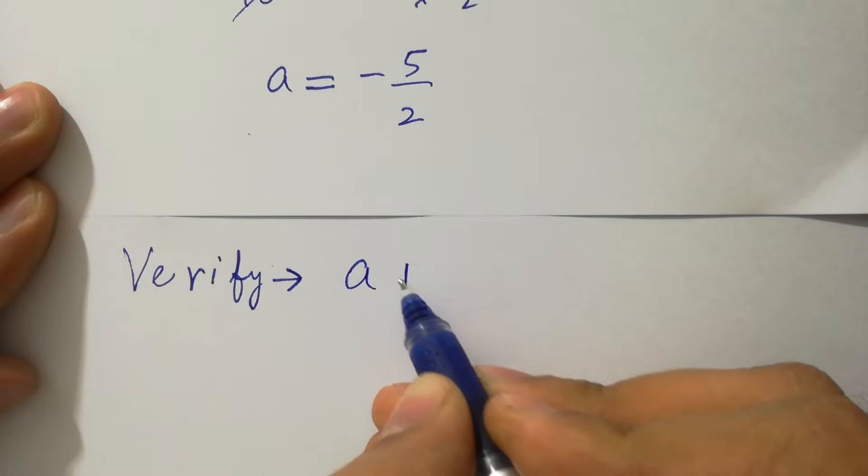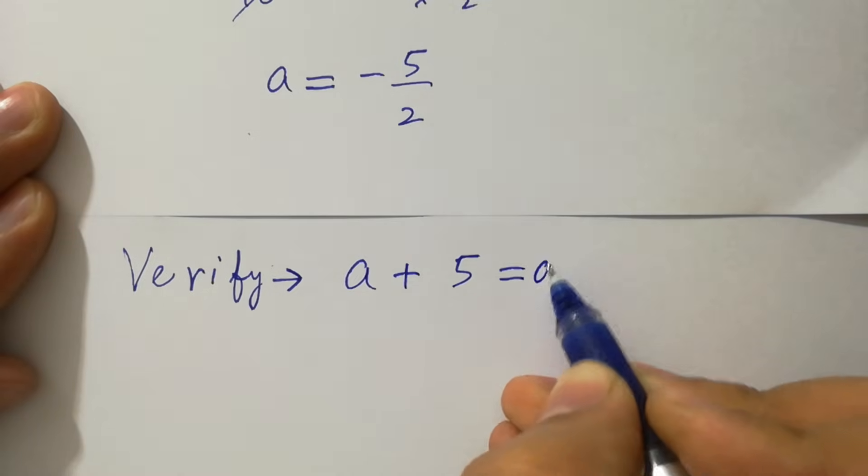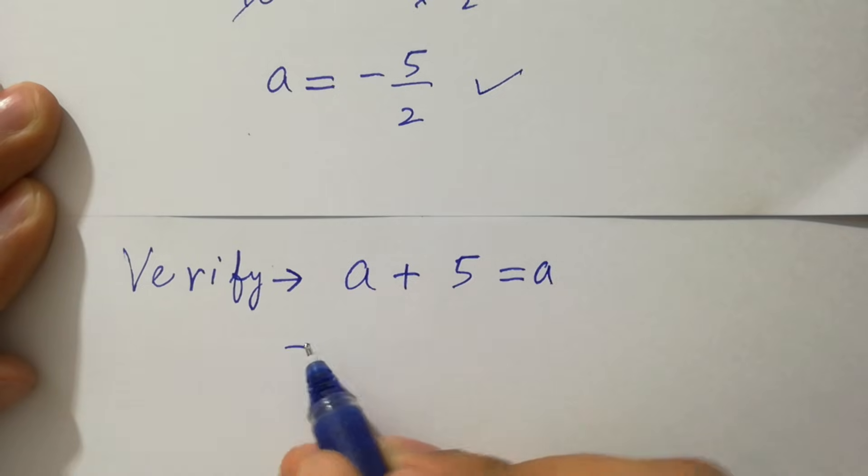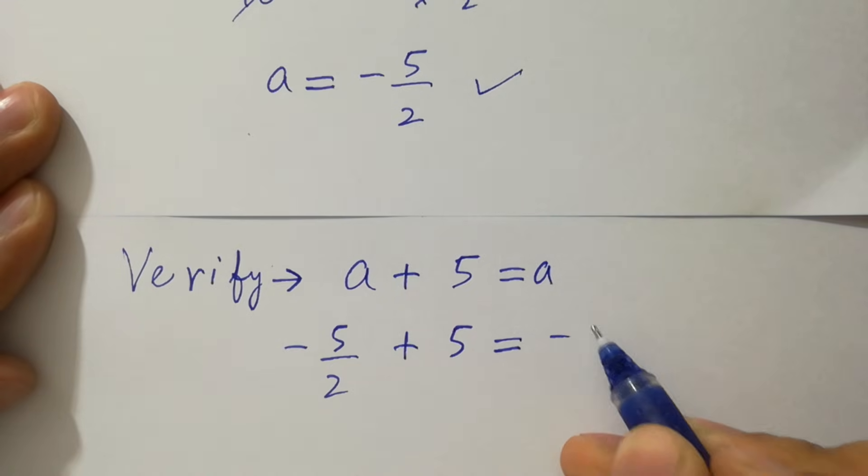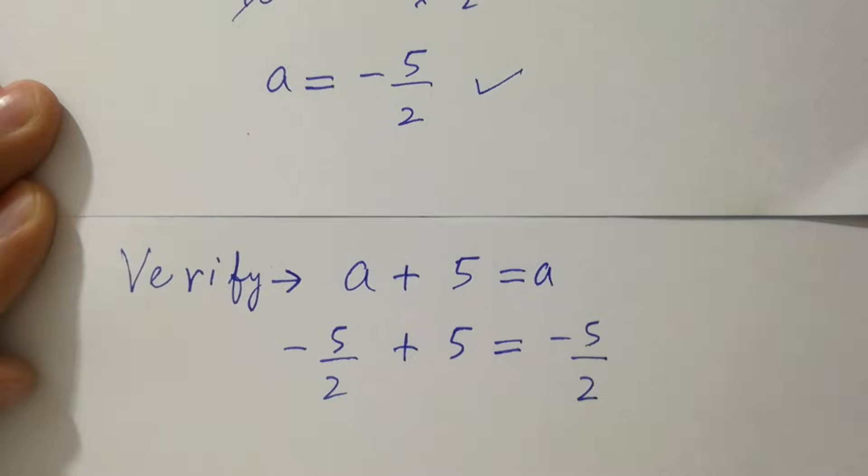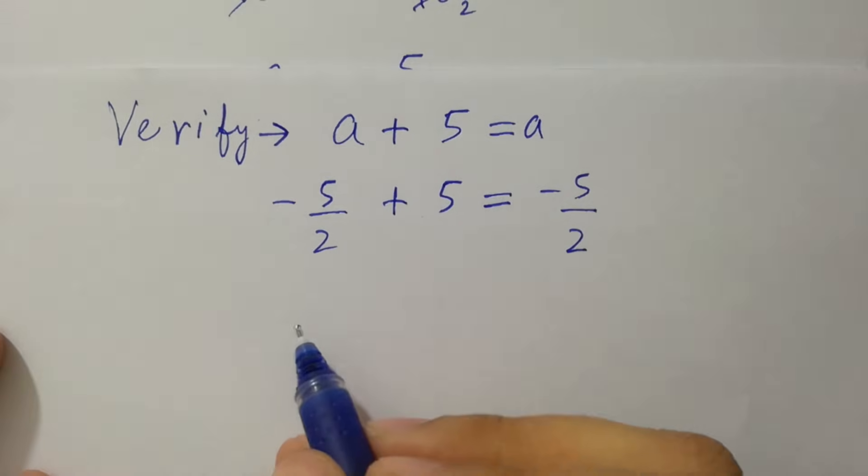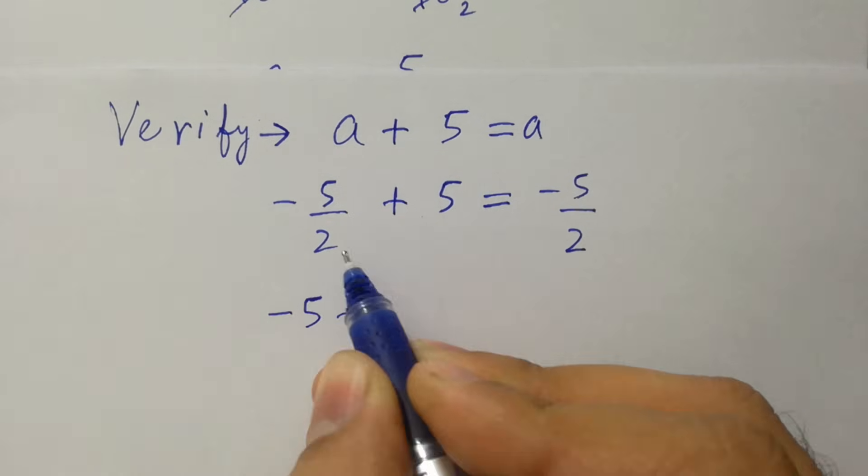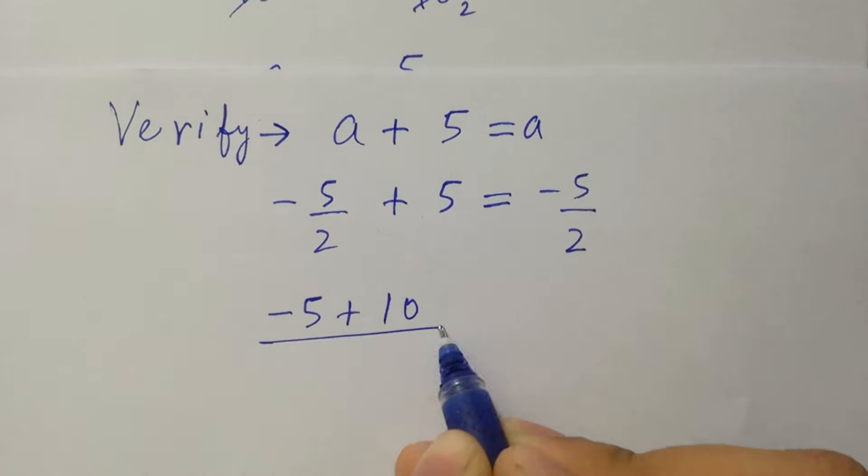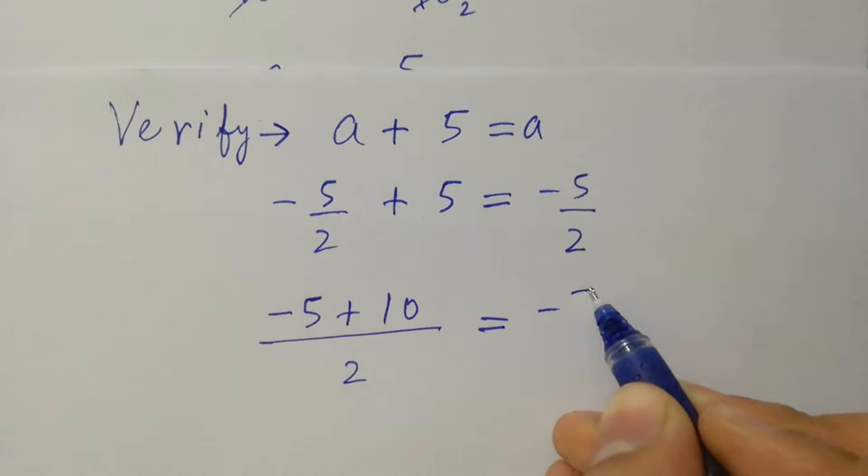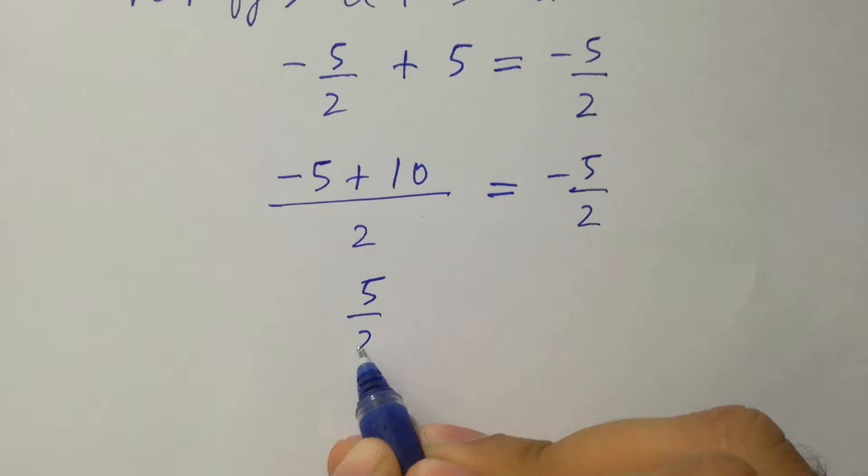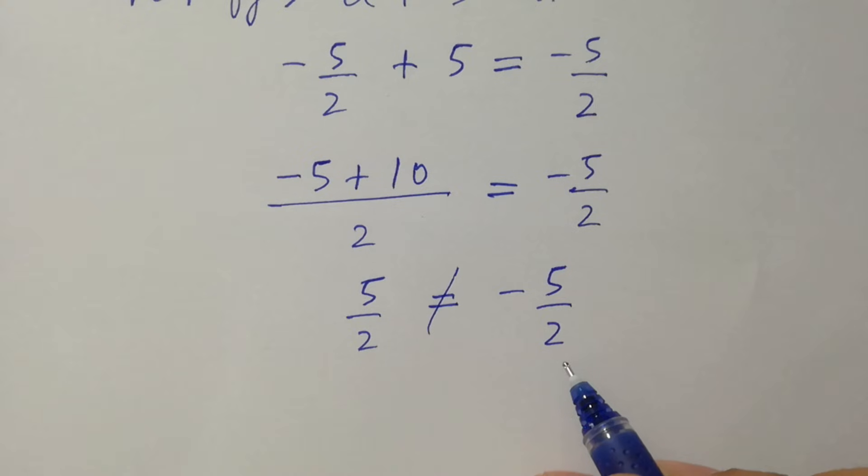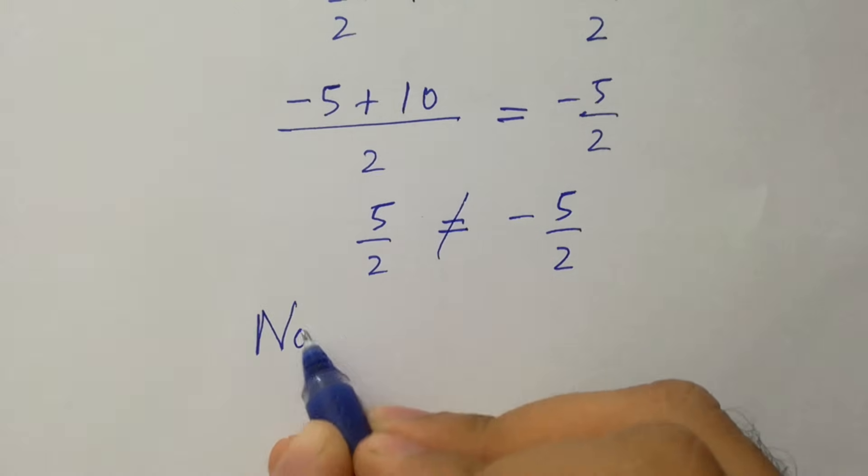We have problem of a plus 5 equal to a. Put the value of a, it will be a is minus 5 over 2 plus 5 as it is, equal to a is minus 5 over 2. Simplify now, we have minus 5 plus 2 times 5 is 10 over 2 as it is, equal to minus 5 over 2. 10 minus 5, we have plus 5 over 2, equal to minus 5 over 2. 5 over 2 does not equal to minus 5 over 2, which shows that it has no real solution.